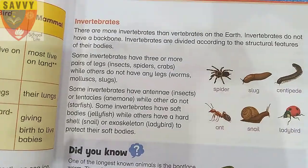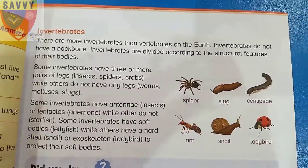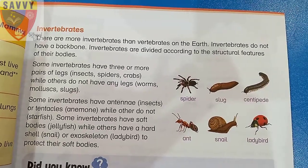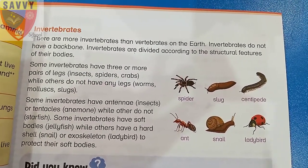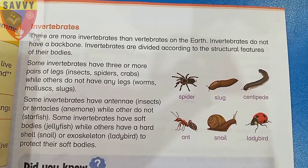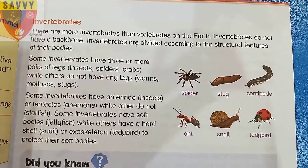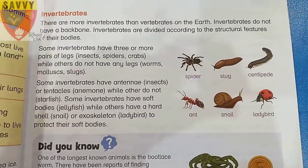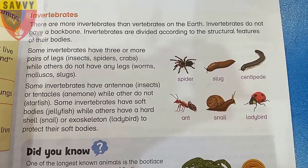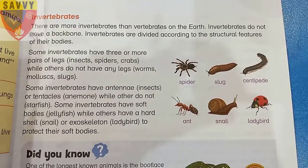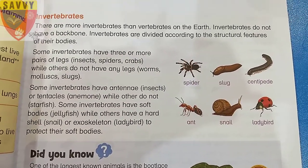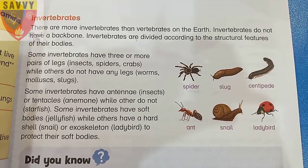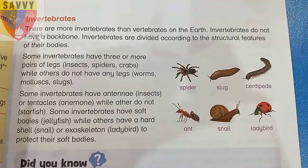Next topic: invertebrates. There are more invertebrates than vertebrates on Earth. Invertebrates do not have a backbone. Invertebrates are divided according to the structural features of their body. Some invertebrates have three or more pairs of legs — insects, spiders, crabs — while others do not have any legs — worms, molluscs, slug. Some invertebrates have a hard shell or exoskeleton, like a snail or ladybird, to protect their soft bodies.